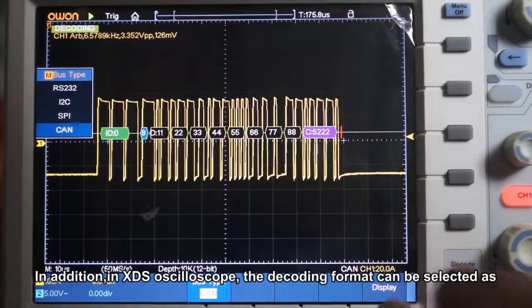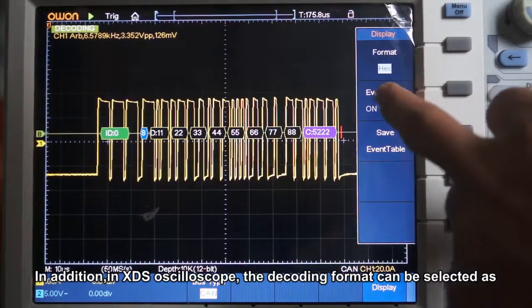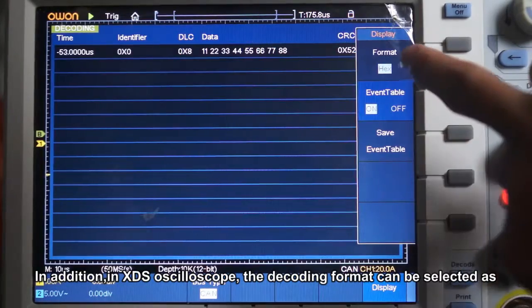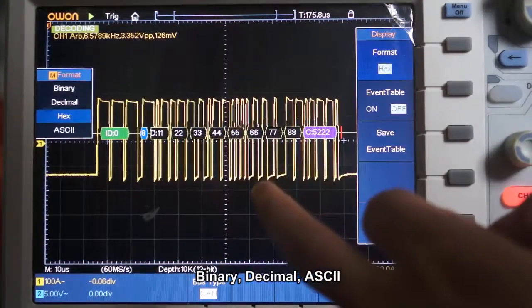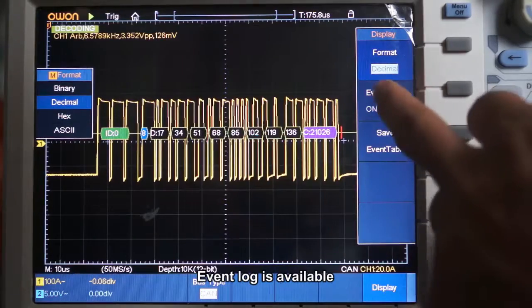In addition, in XDS oscilloscope, the decoding format can be selected as binary, decimal, ASCII too. Even log is available.